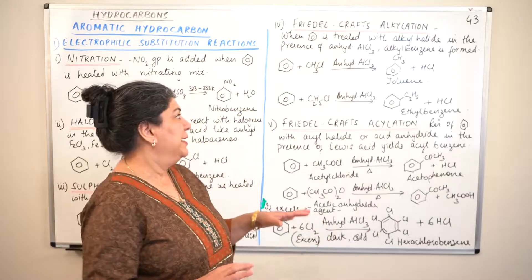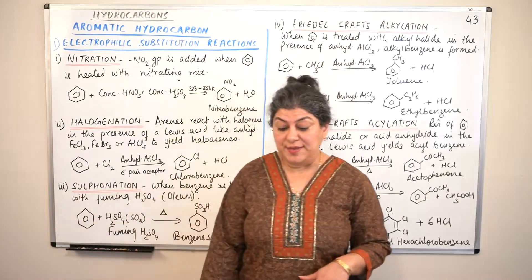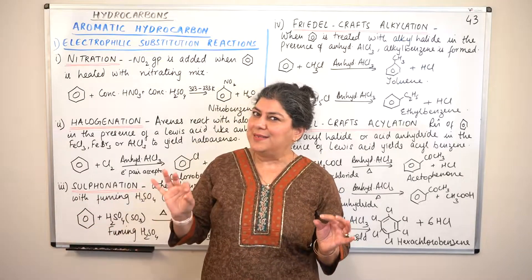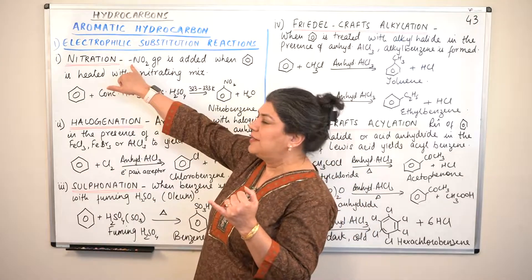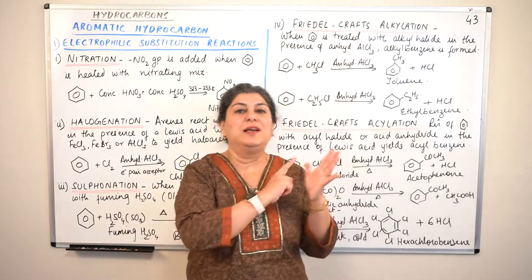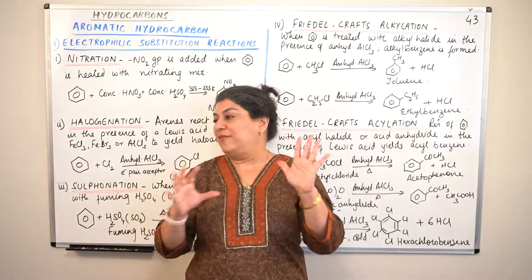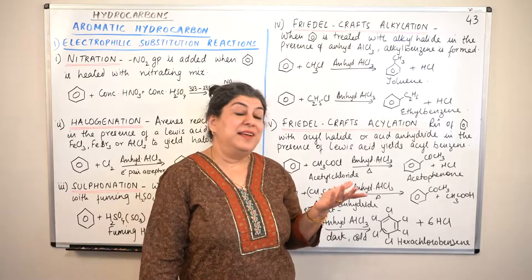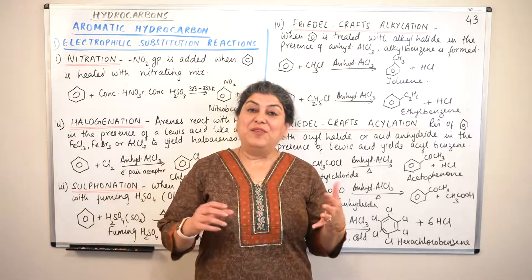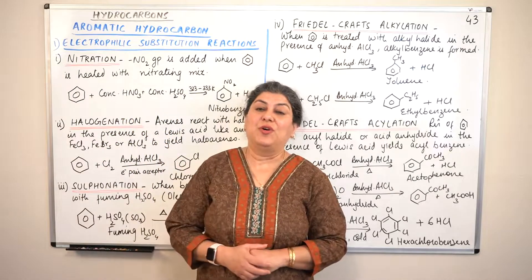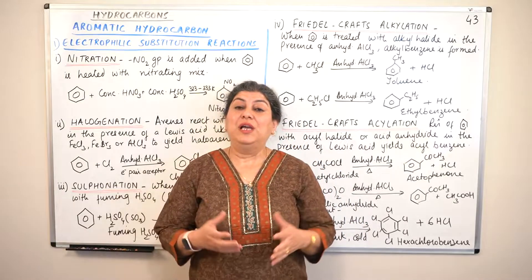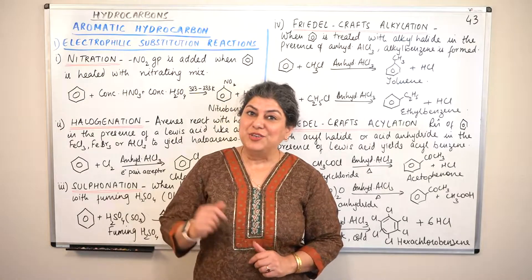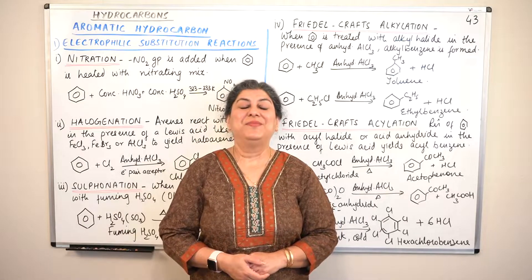So those were the electrophilic substitution reactions you need to memorize. There are five reactions: nitration, halogenation, sulfonation, alkylation, and acylation. For each, note what conditions are required and which group substitutes a hydrogen of benzene to give the product. In the next video I'll explain the mechanism and why these are called electrophilic substitution reactions. If you found this video helpful, give it a thumbs up, subscribe to my channel, and keep returning for more chemistry videos. Thank you and bye-bye for now.